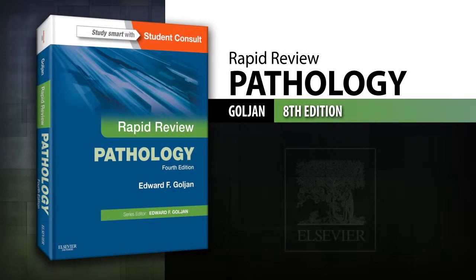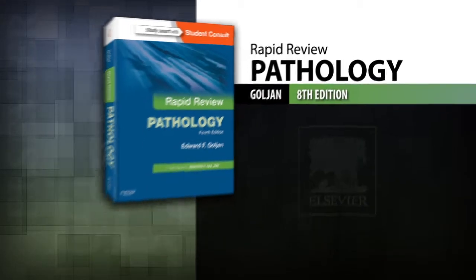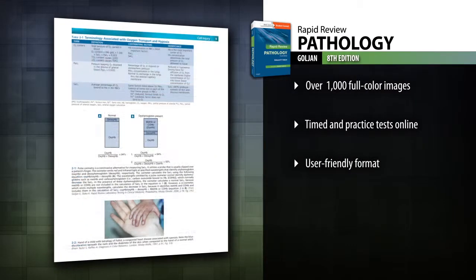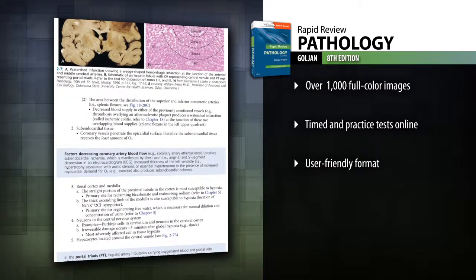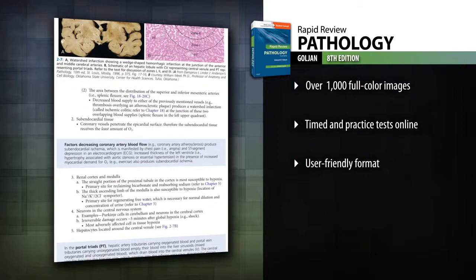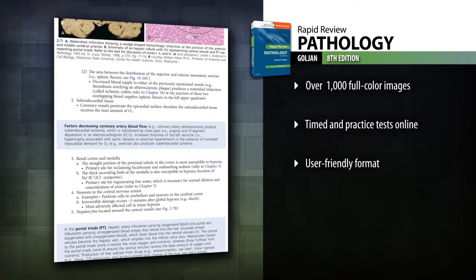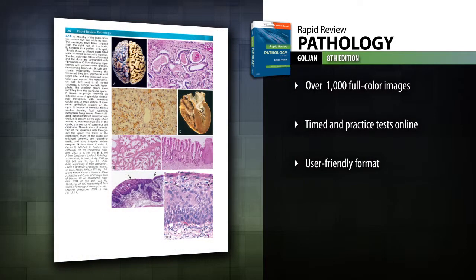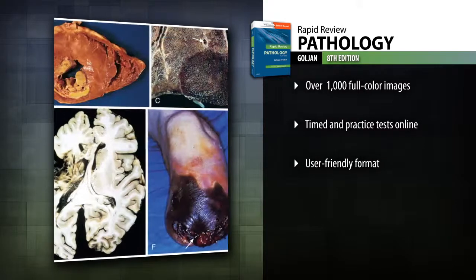Introducing Rapid Review Pathology, 4th edition. Master all of the pathology material covered on the USMLE Steps 1 and 2 with Rapid Review Pathology. This outline format review of key concepts features high-yield, full-color images and margin notes, plus more than 400 USMLE-style questions online.